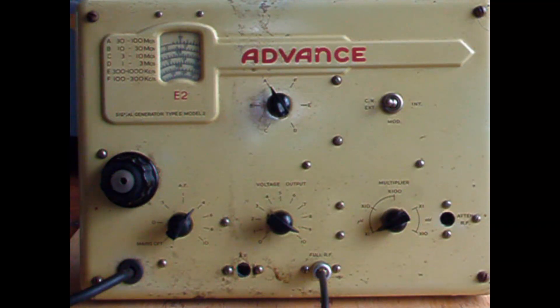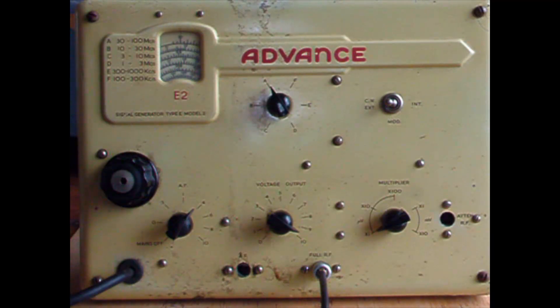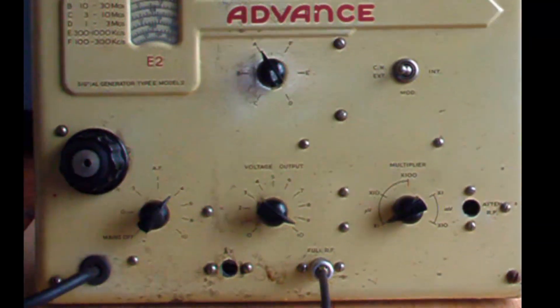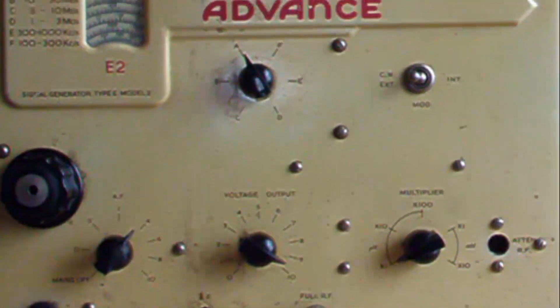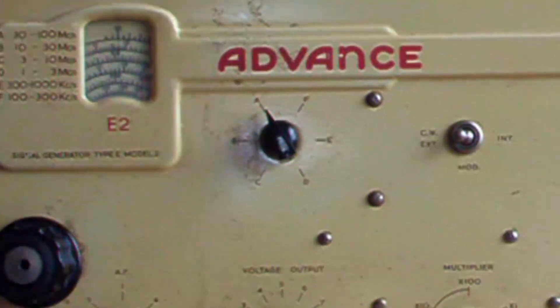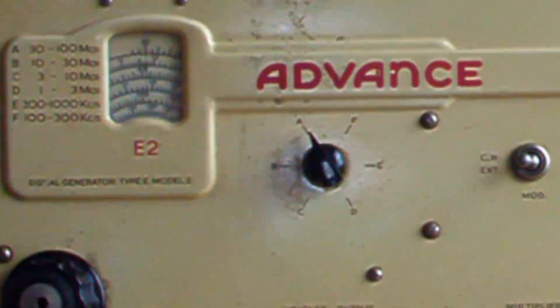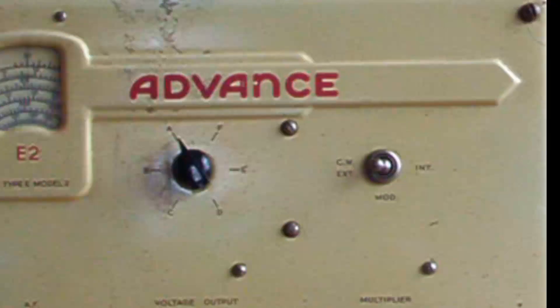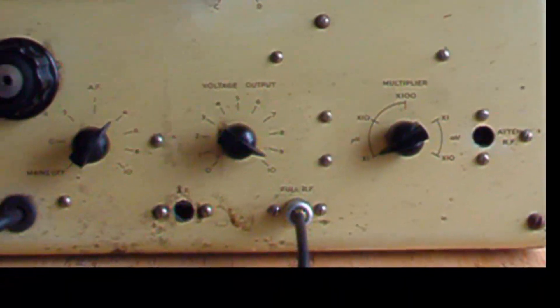This is an old signal generator that I've been given. It's an Advanced Signal Generator Type E Model 2. It has six frequency ranges, covering from 100 kHz to 100 MHz.